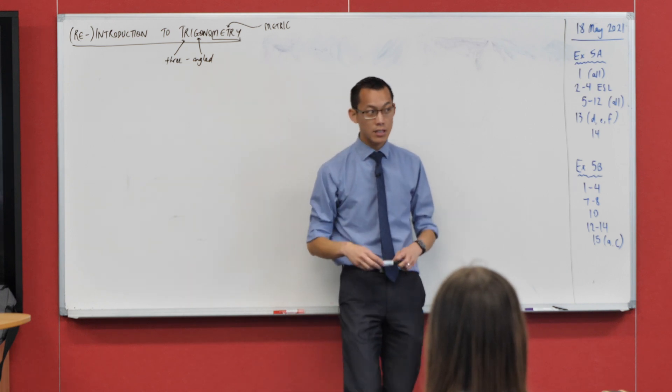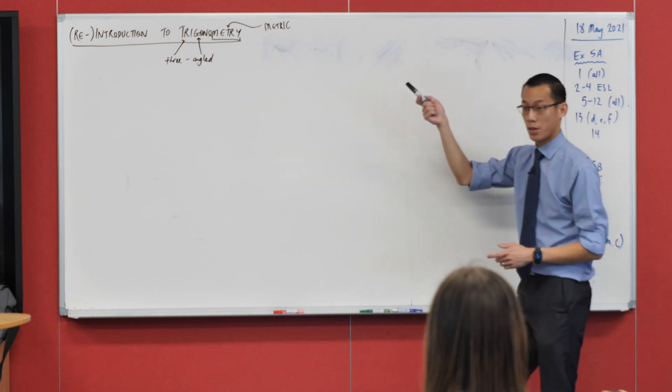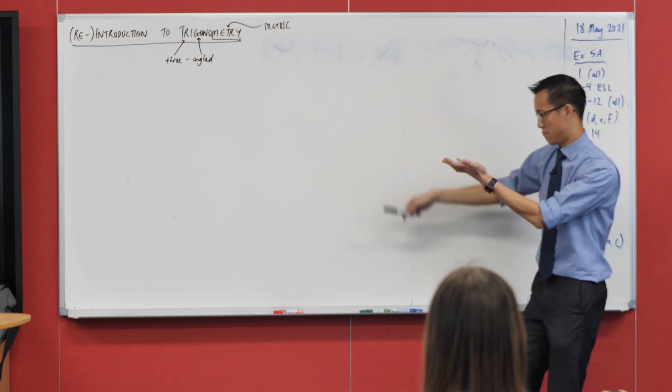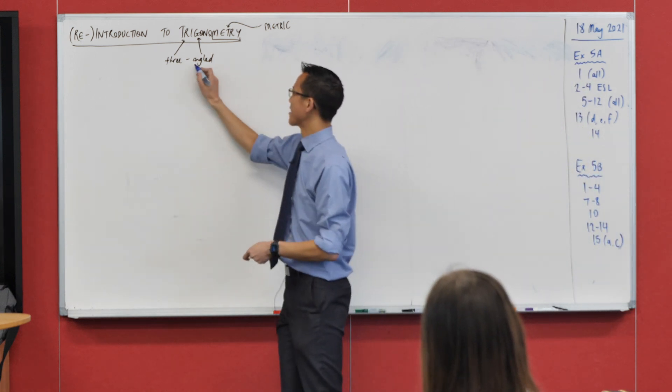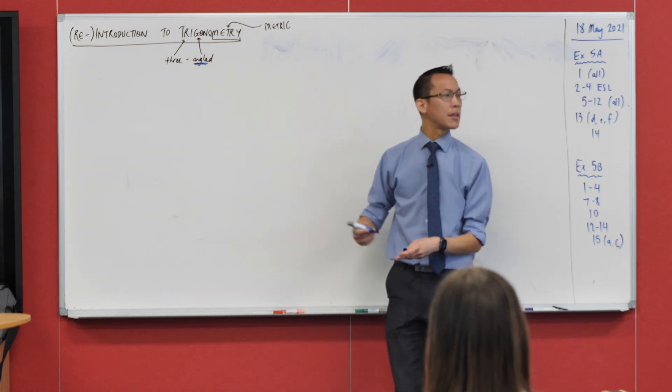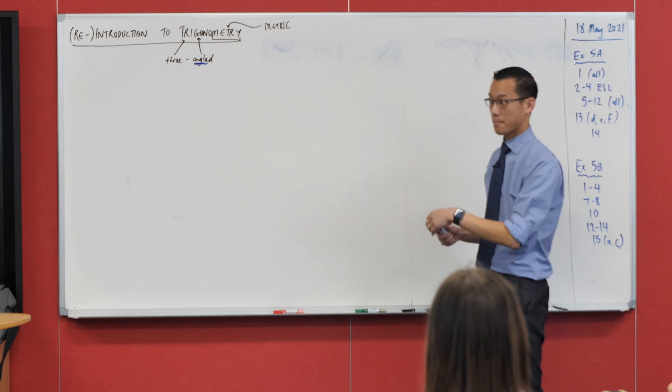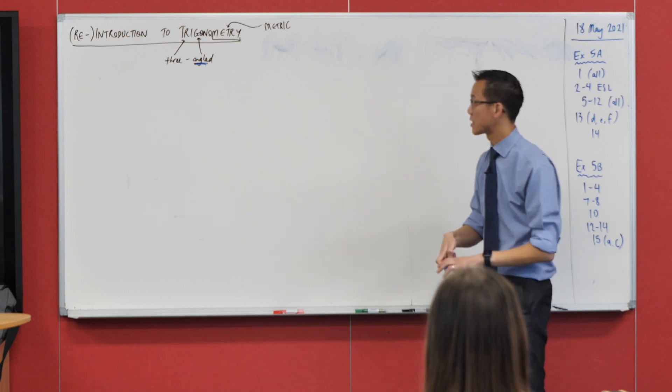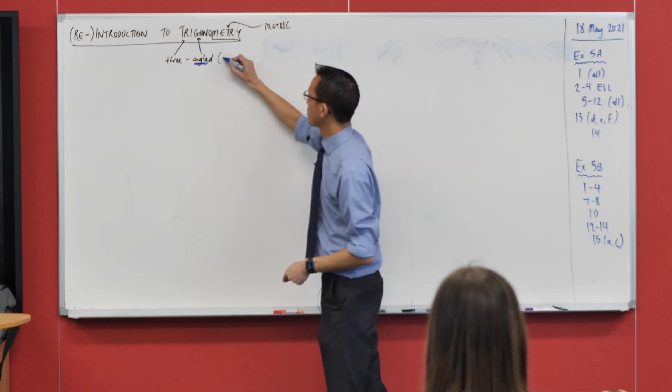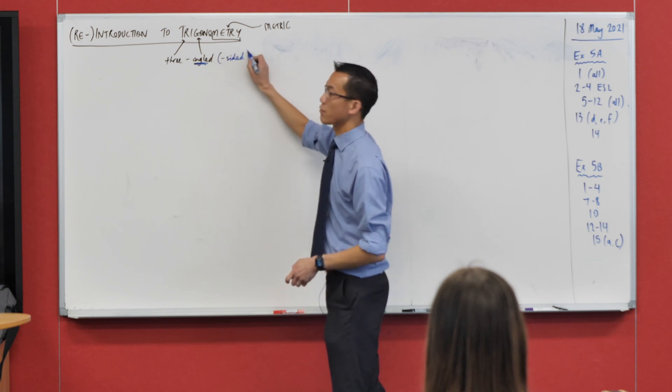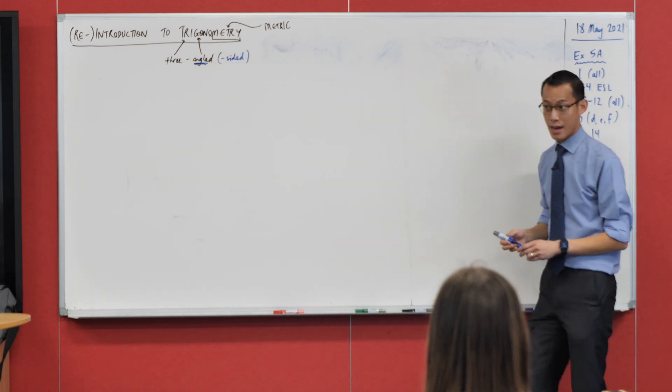What kinds of things do we measure in triangles? We've talked about one of them - angles. We're interested in how big angles are, but what are the other things we're interested in? Yeah, sides. Sides and angles, that's kind of it. And by virtue of being three-angled, they're also three-sided.